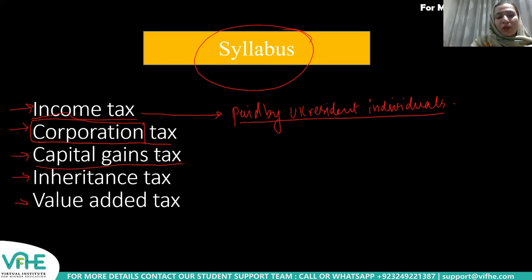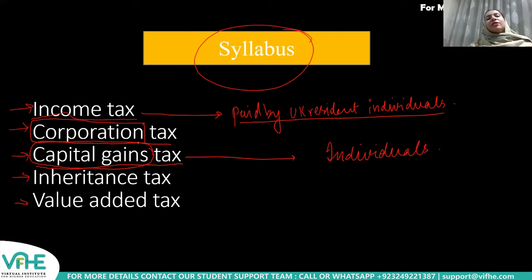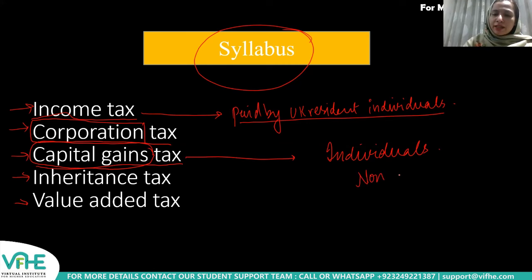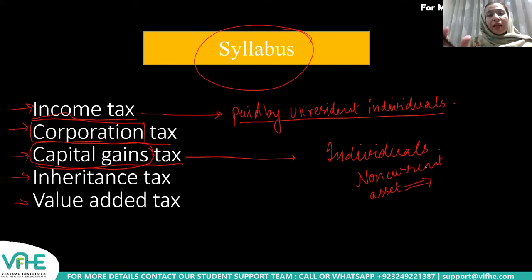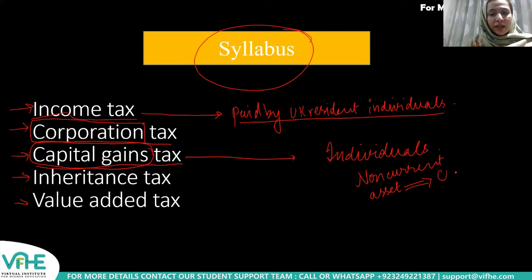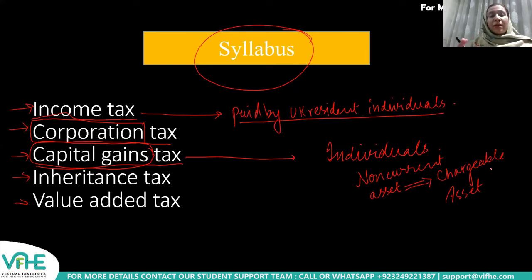There is another type of tax called Capital Gains Tax. This is once again paid by UK resident individuals on the profit generated upon selling a chargeable asset — generally a non-current asset. Not all non-current assets lead to Capital Gains Tax; there is a vast majority of non-current assets that, according to taxation rules, constitute a disposal of a chargeable asset, and when sold for a gain, Capital Gains Tax liability arises.